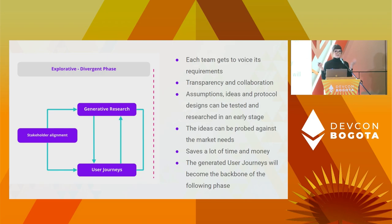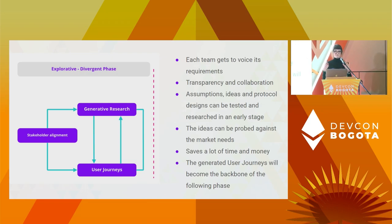In the explorative divergent phase, everyone is brought to the table from the start — design, development, and business. A designer will facilitate stakeholder interviews and each team will map out their requirements: user needs, technical constraints, business goals are all considered. User journeys are created based on each team's insights: EVM constraints, security issues, user needs, pain points, KPIs, and business requirements are all incorporated into a high-level user journey map. The user journeys' assumed needs and pain points are then probed in explorative research by speaking to real people.